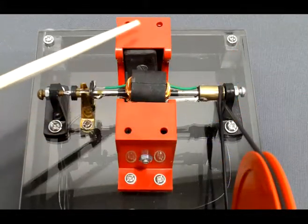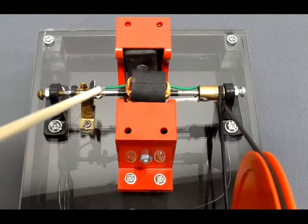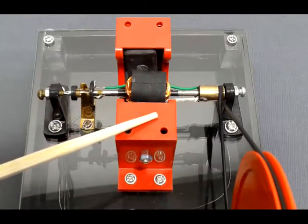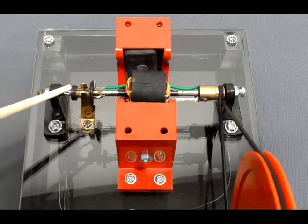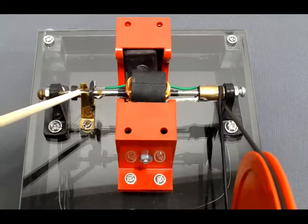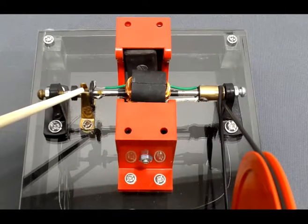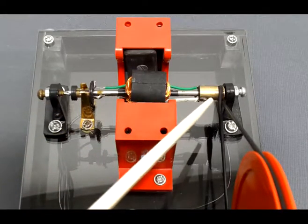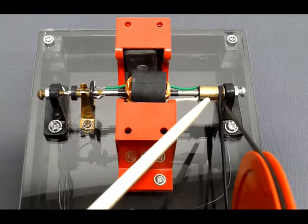The top plate of the generator can be removed so students can see the coils and the two magnets, as well as the split ring commutator on the left side, which creates direct current, and the solid brass connector on the right, which creates the constant AC current.